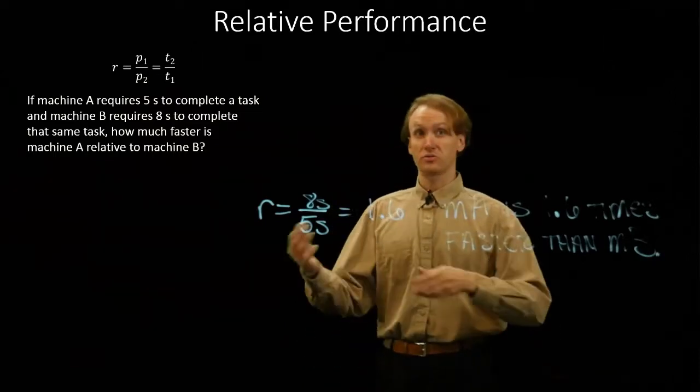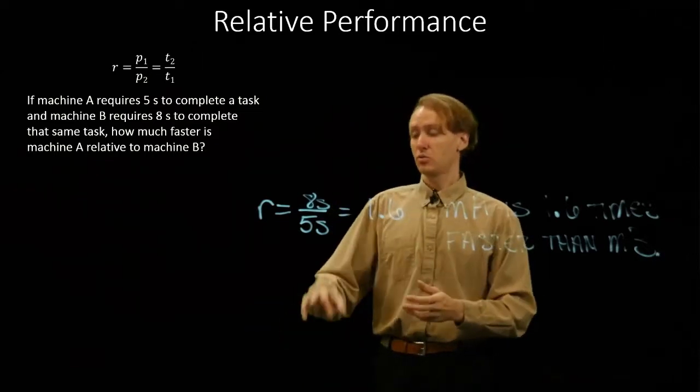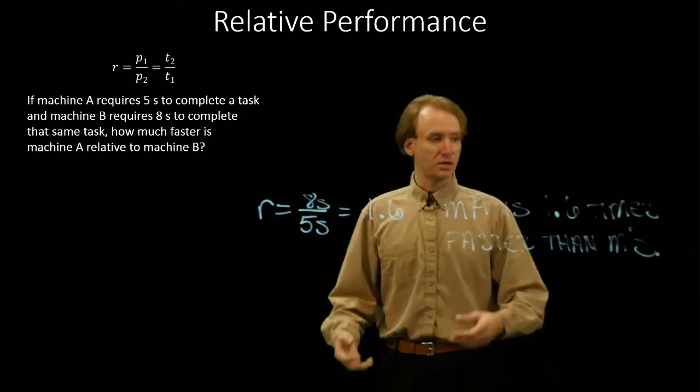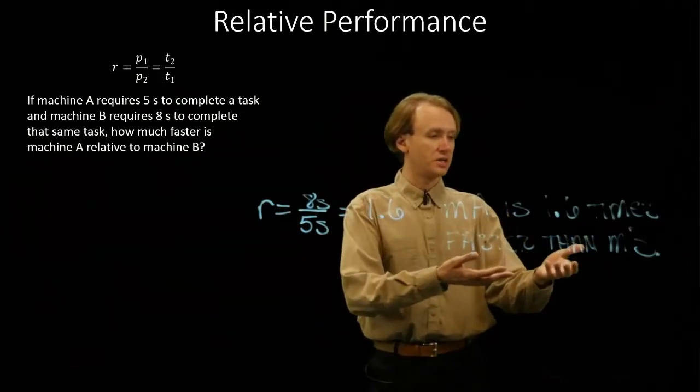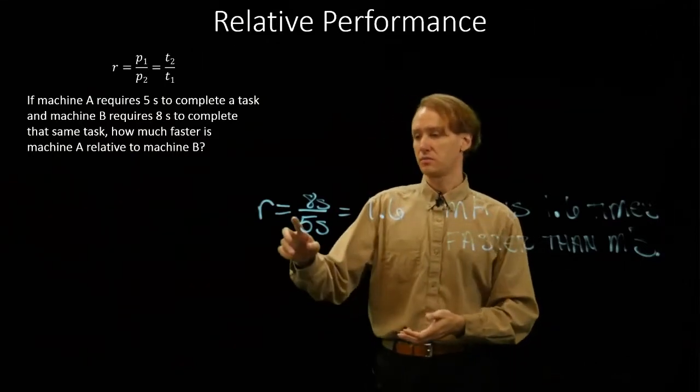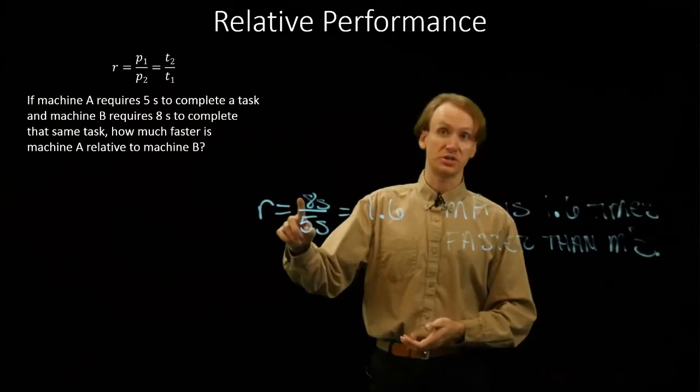Again, if we were interested in the relationship between machine B and machine A, we could invert this ratio. We'd get 5/8, and then we'd say that machine B is 5/8 as fast as machine A. But in this case, the question is asked about machine A relative to machine B.